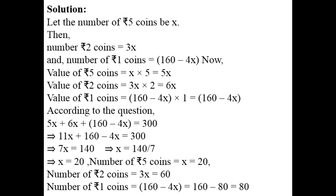ठीक पहले question की तरह, value of 5 rupees coins: x multiply 5 = 5x. And value of 2 rupees coins: 3x multiply by 2 = 6x. And value of 1 rupees coins: number of coins से multiply करेंगे 1 को (160 minus 4x)। Question के according मेरे पास 300 rupees हैं तो 5x plus 6x plus (160 minus 4x) = 300. 11x minus 4x = 7x, और 160 को replace करके 300 के साथ।